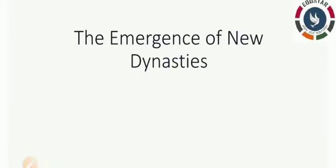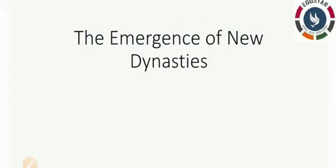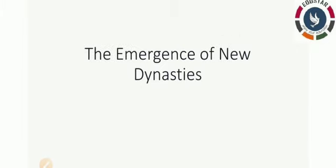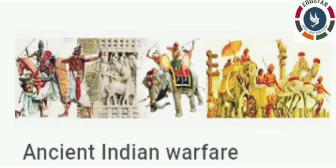The first topic of this lesson is the emergence of new dynasties. When new dynasties are formed, we think the existing dynasty would be defeated by another king who then forms his own rule. This is how new dynasties are formed — this is one way. But there is another way new kingdoms also emerged.